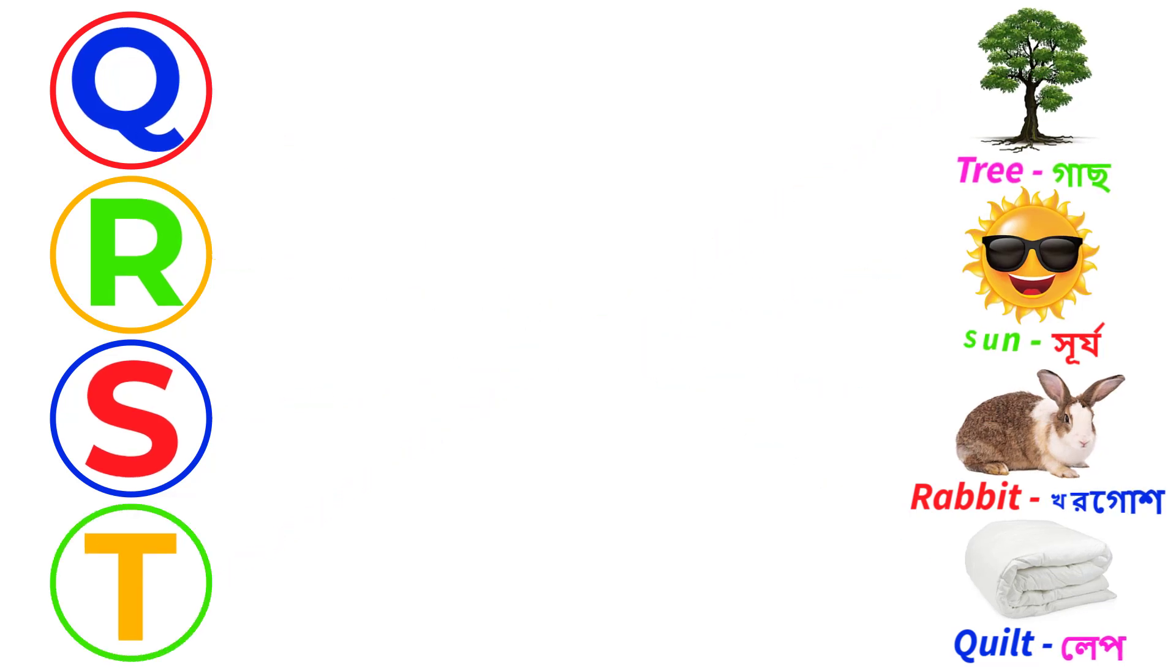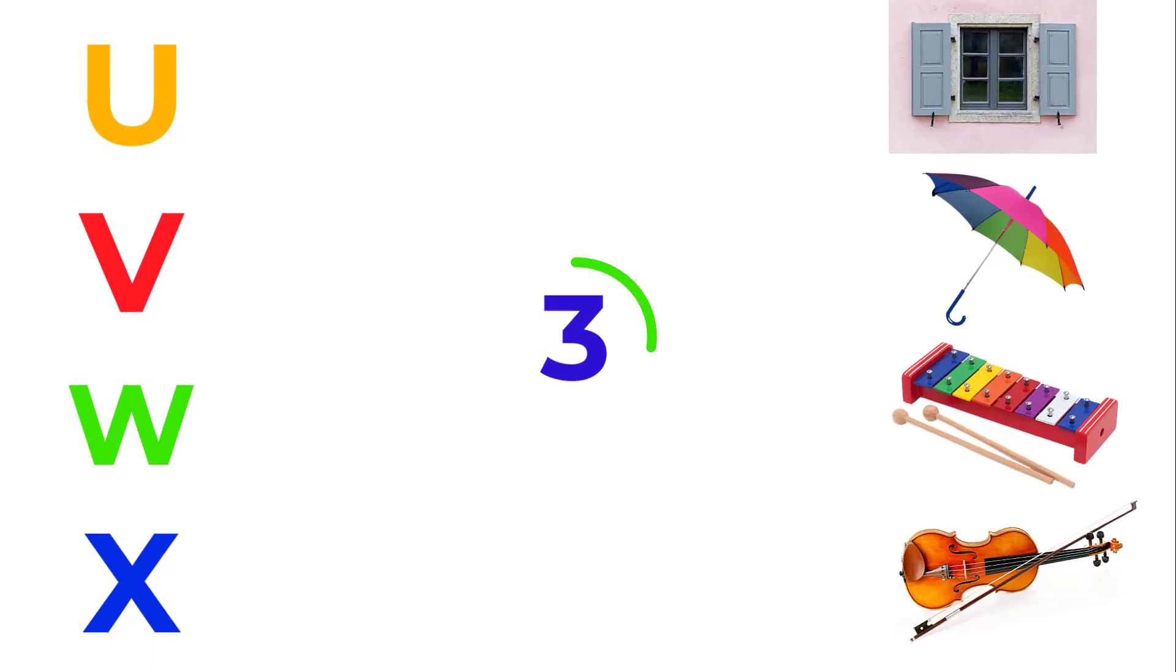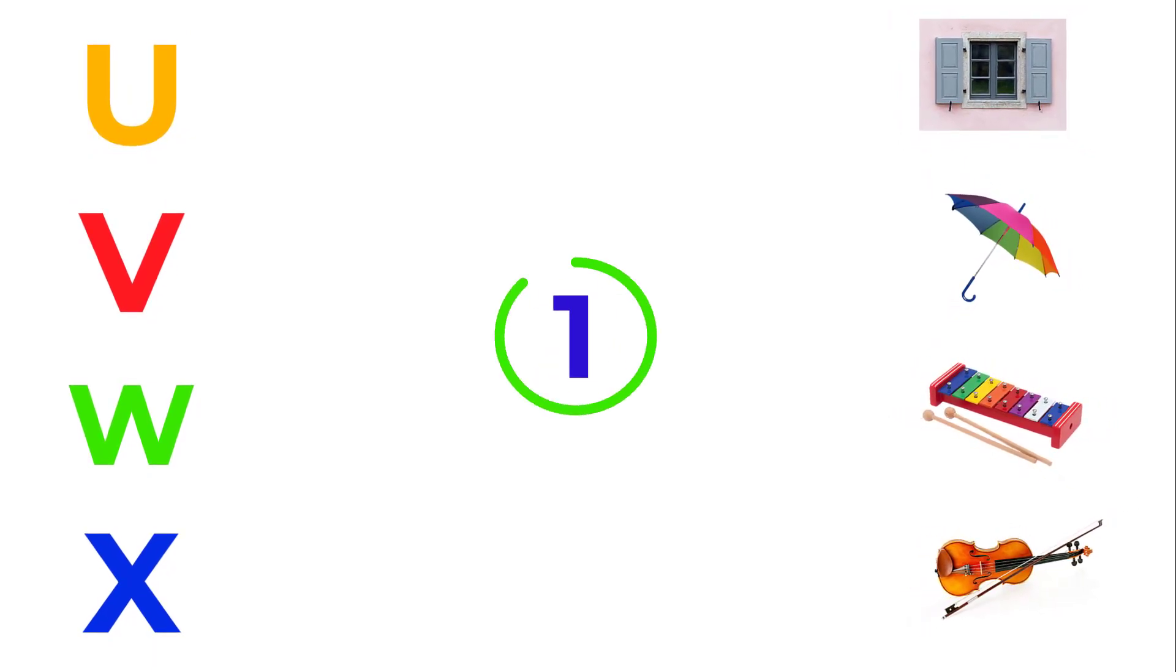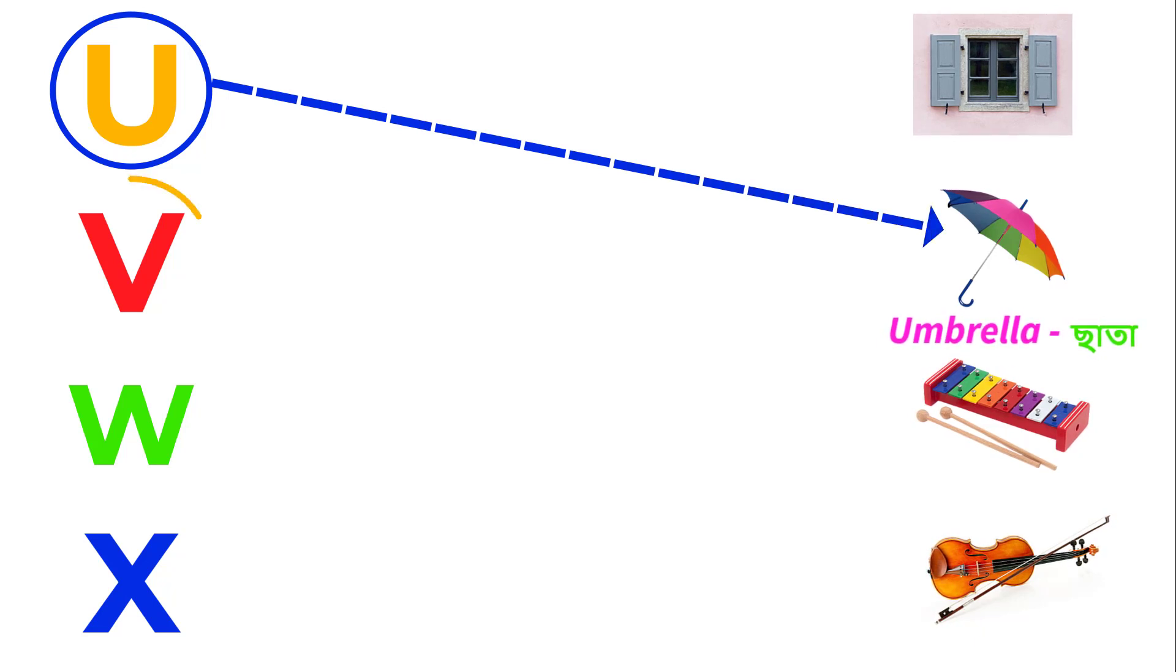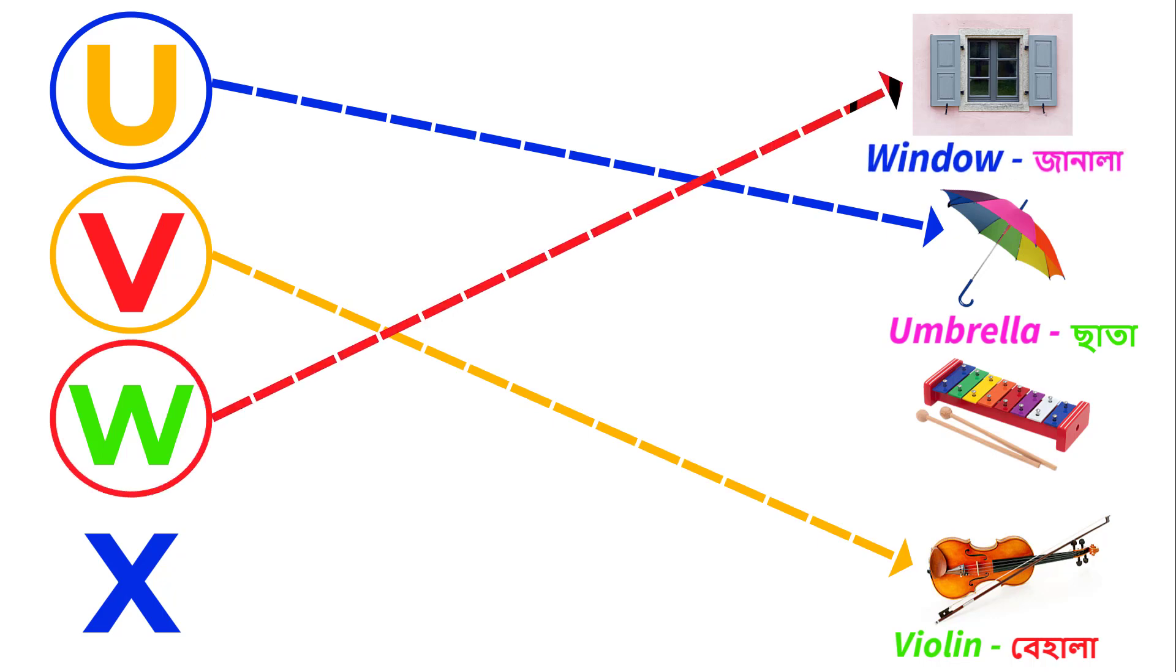U for umbrella, V for violin, W for window, X for xylophone.